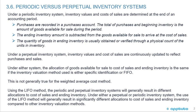Under a perpetual inventory system, inventory values and costs of sales are continuously updated to reflect purchases and sales. Under either system, the allocation of goods available for sale to cost of sales and ending inventory is the same if the inventory valuation method used is either specific identification or FIFO. This is not generally true for the weighted average cost method. Using the LIFO method, the periodic and perpetual inventory systems will generally result in different allocations to cost of sales and ending inventory.